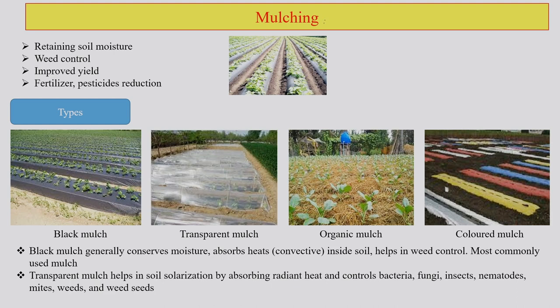One practice to mention is mulching. Various kinds of mulching are done for agricultural crop production — you can have black mulch with black colored plastic, transparent mulch with transparent plastic, organic mulching where you put different crop residues, and colored mulching for different purposes. Each one of them has a different purpose and also a different kind of investment.